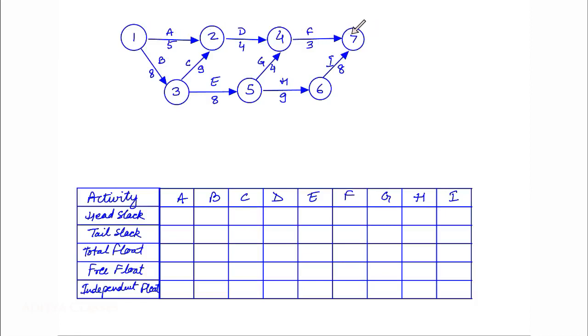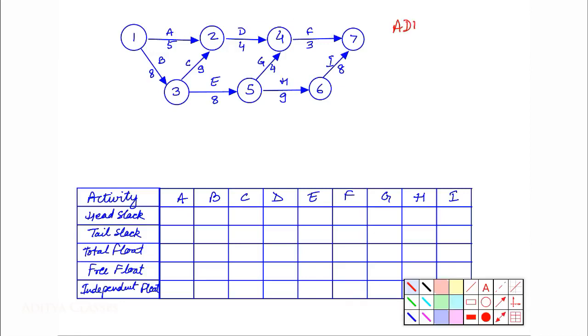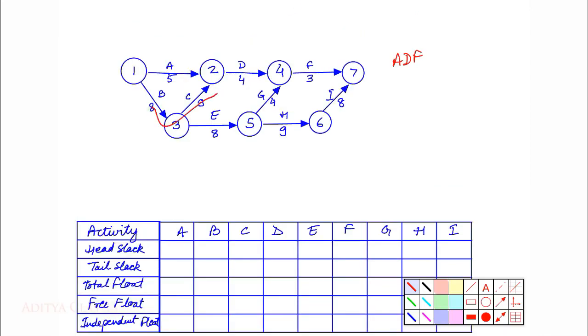First step is finding various possible paths from 1st to 7th event. We have 1, 2, 4, 7 that is ADF. Then we have BCDF. What would be the duration for this path? It would be 8 plus 9, 17, and 4, 21, and 3, 24. So our path BCDF has duration 24. What is the duration for ADF? It was 5 and 4, 9 and 3, 12.